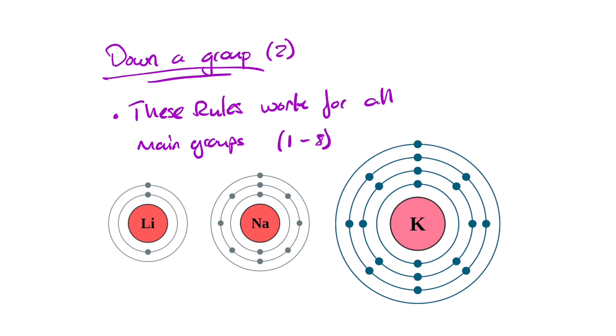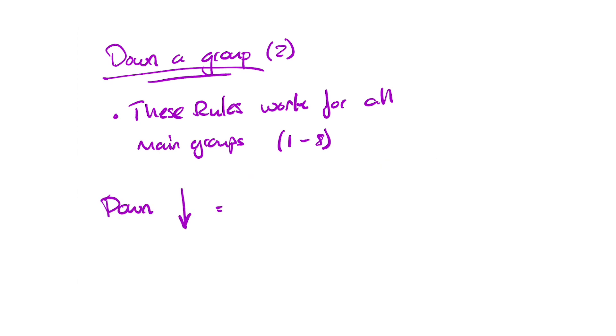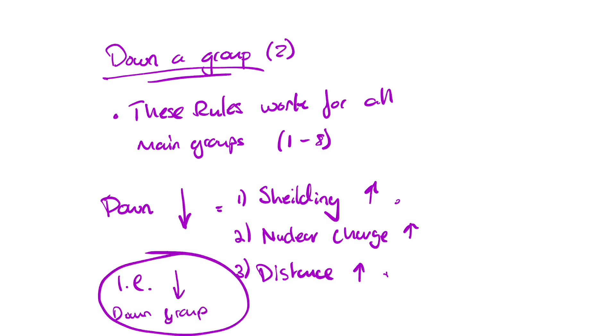The final thing really for this video before we maybe look at an exam question or two is the trends that they want you to know. And that is down a group and across a period. The first thing we're going to do is deal with down a group. The group they want us to look at is group 2. These rules apply for all the main groups though. As a matter of fact, instead of stating the trends, we're going to figure out what happens. As you go down a group, every single time, the energy level amount increases by 1. So shielding goes up. Nuclear charge, that does go up, yes. But distance also increases as well. The fact that the shielding and distance increases so much every time you go down, the nuclear charge increase is negligible. Therefore, ionization energy goes down, down a group.